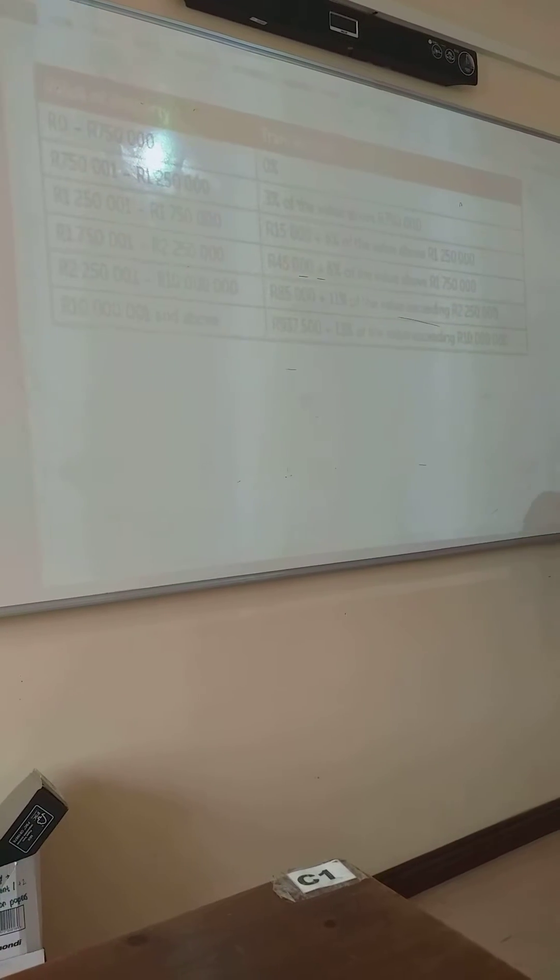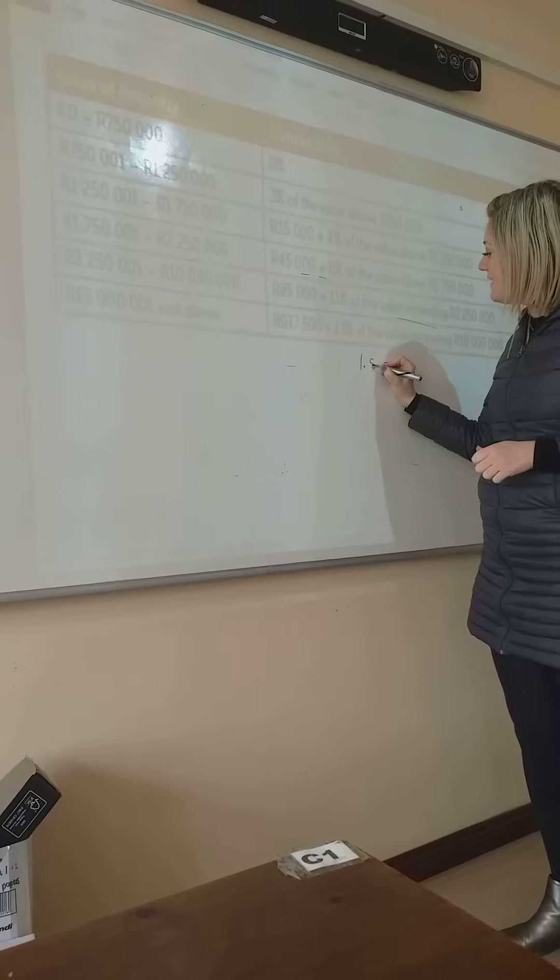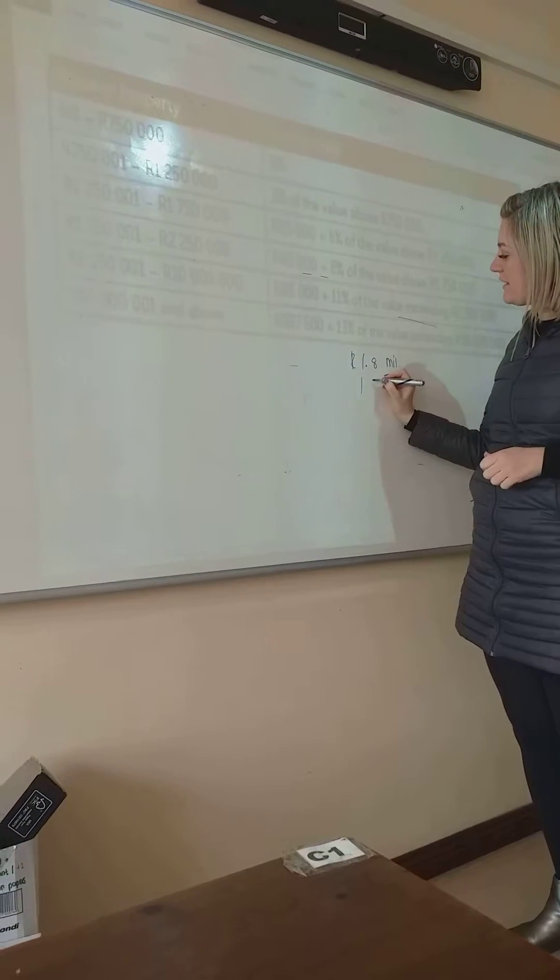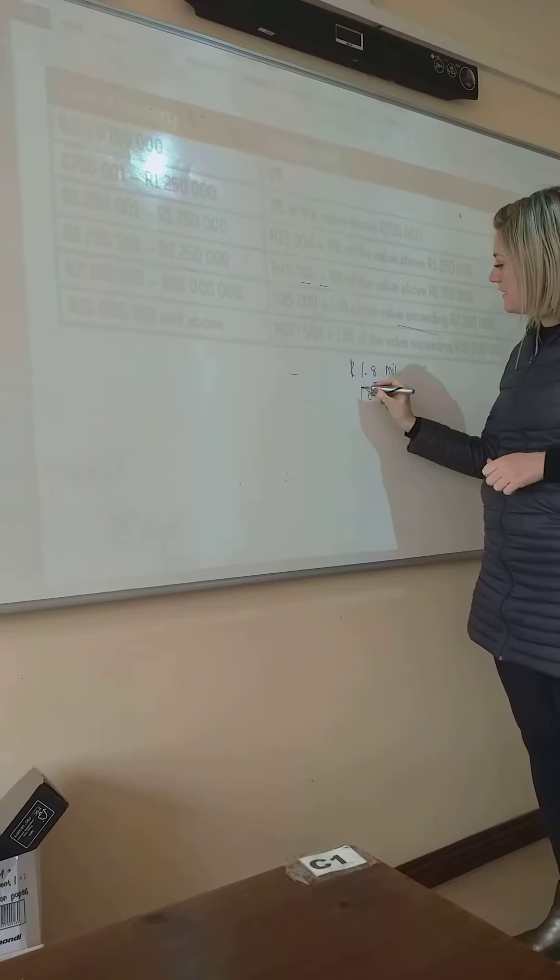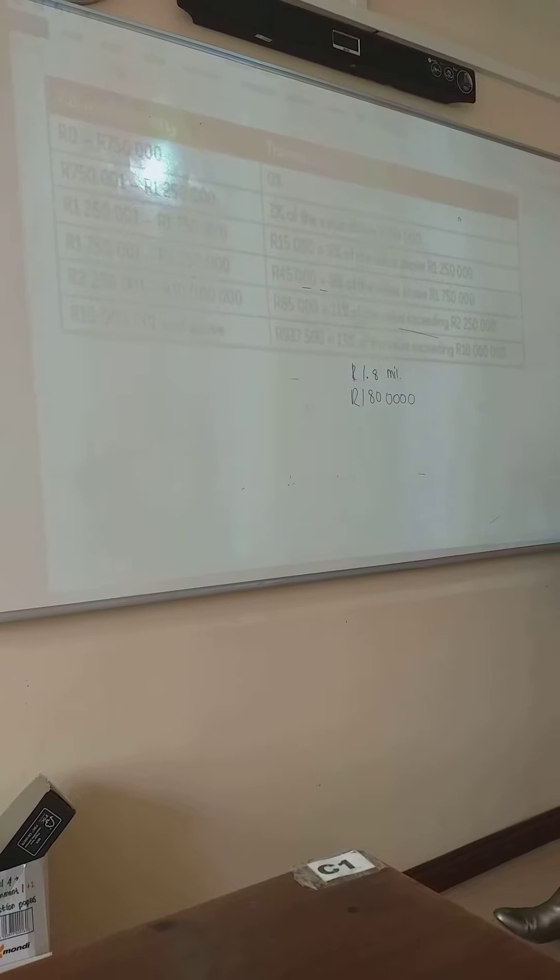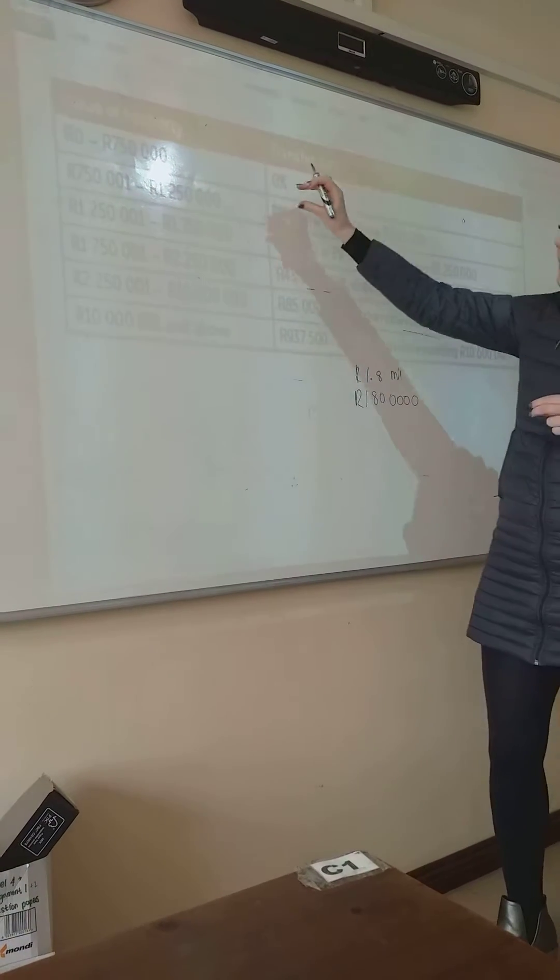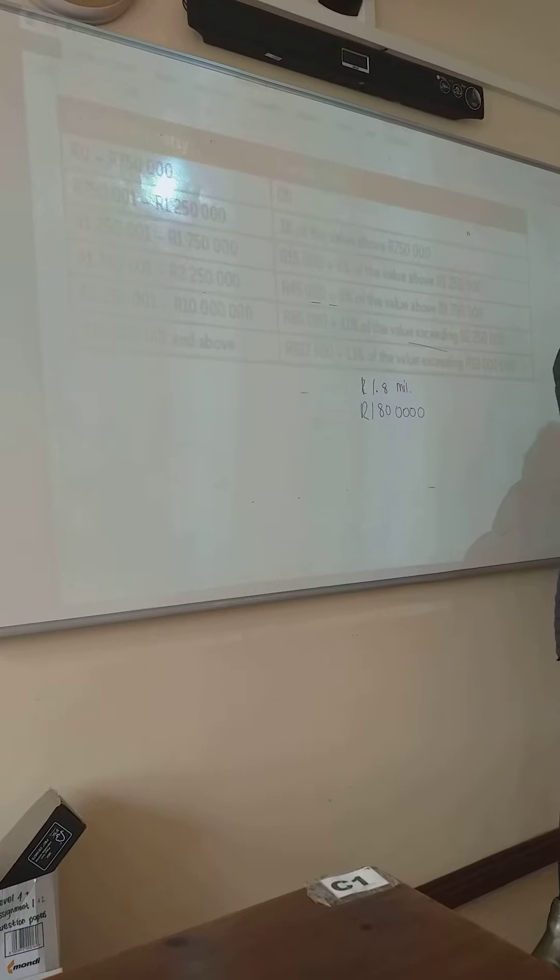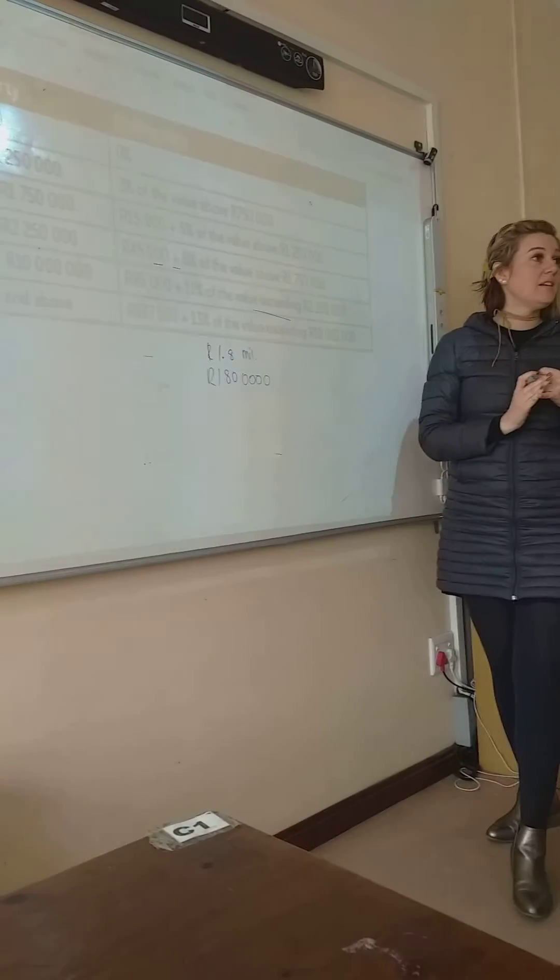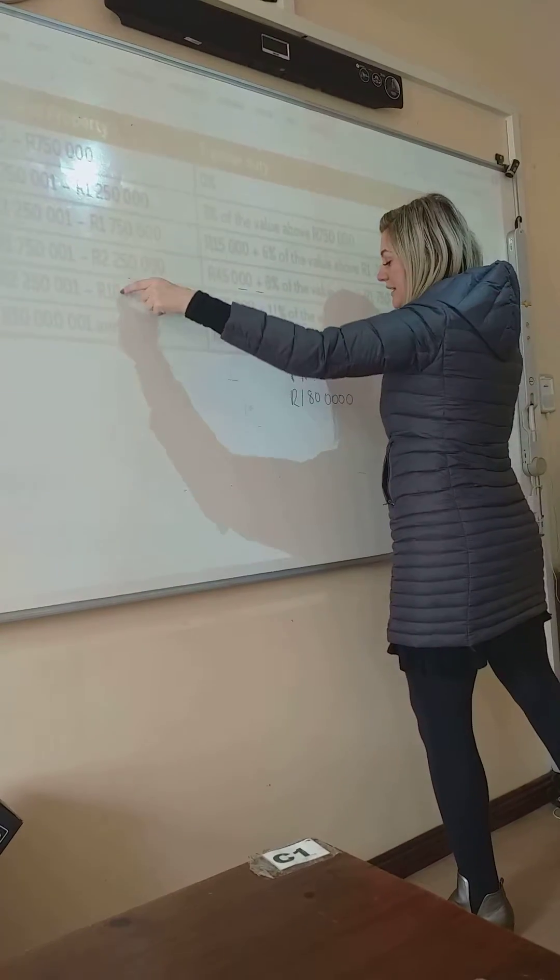So when I buy a property of, let's say, 1.8 million, we're going to write it like that. Does it make sense to you that it's going to fall in what bracket? Can you see? It's exactly the same step as we did with the rebate table. Can you see that line? So we're going to take this, and where are you going to put it in here?